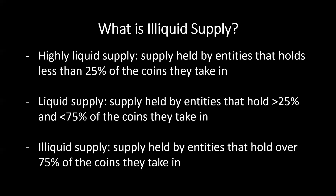Third, we have illiquid supply — defined as supply held by entities that hold over 75% of the coins they take in. So for every four coins they take in, they hold more than three. These entities are the long-term investors, the strong hands in the market.